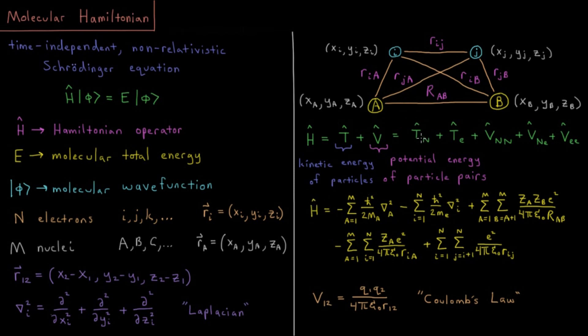Breaking all those terms out: sum over all nuclei A=1 to M of the kinetic energy operator for that particle, -ℏ²/(2mₐ)∇²ₐ, where ℏ is Planck's constant over 2π squared, divided by two times the mass of the nucleus, times the Laplacian operator acting on the coordinates of that nucleus. Then the same term for all electrons: sum i=1 to N electrons, -ℏ²/(2mₑ)∇²ᵢ.